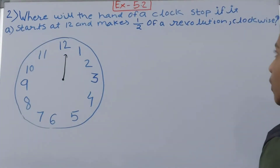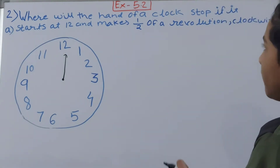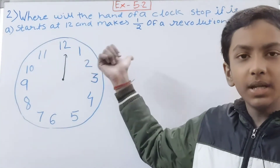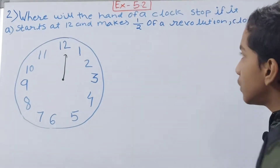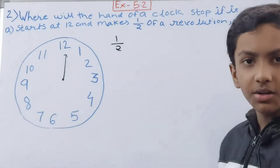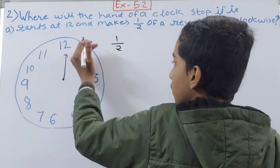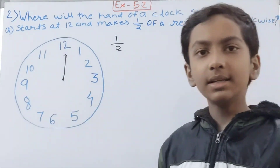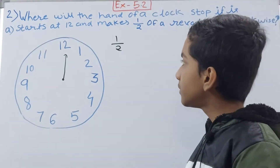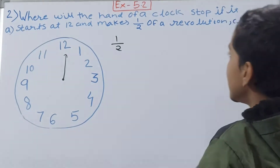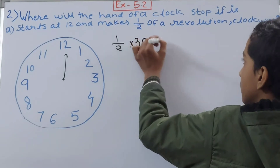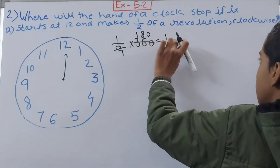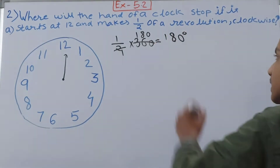We need to find where the hand stops. The revolution given is fractional, so we convert it to degrees. A complete revolution starts from 12, goes through 1, 2, 3... all the way back to 12, and measures 360 degrees. So we multiply the fractional revolution by 360: 1/2 × 360 = 180 degrees.